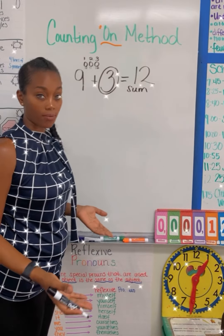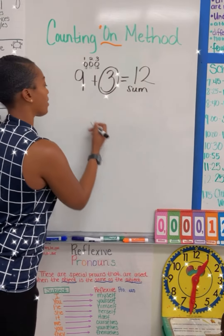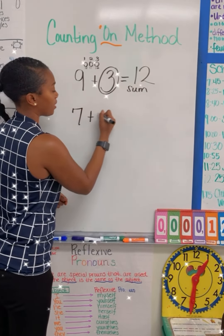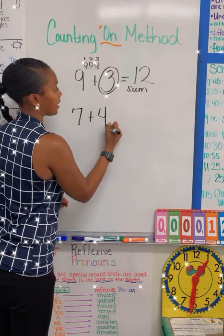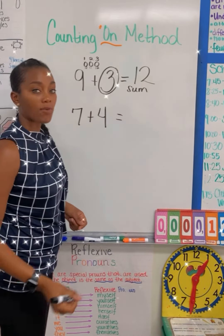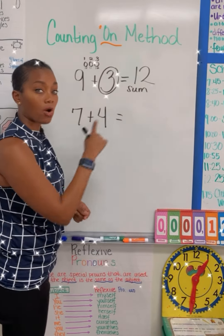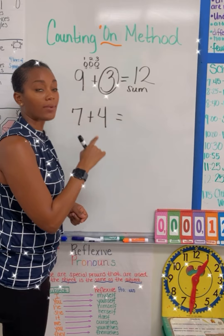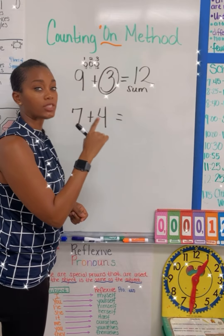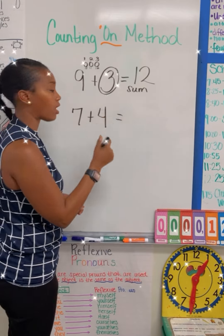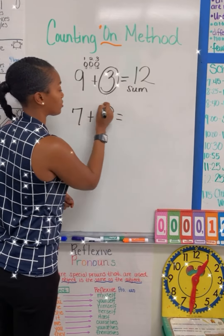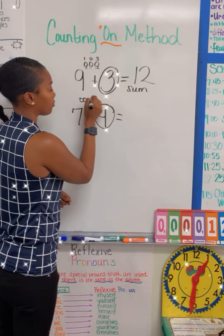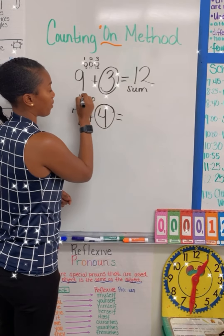Let's try another one. Say we have the number 7 plus 4. I'm going to circle the 4 because it's going to tell me how many counters I need to use to count on. So I circle the 4, and I draw 1, 2, 3, 4.